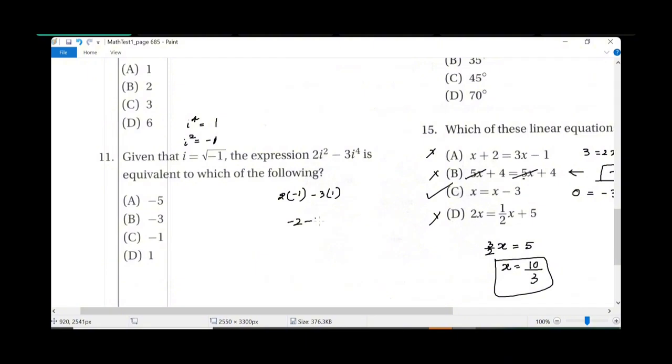So negative 2 minus 3, which is negative 5. Okay?